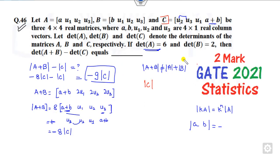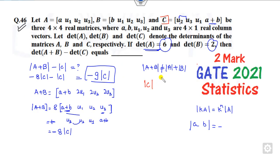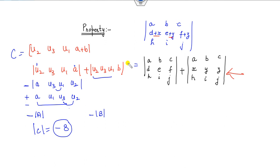The determinant of A is given as 6 and det(B) is 2. So det(C) equals minus 6 minus 2, which is minus 8. Substituting this back, the determinant of A plus B minus det(C) equals 8 times (minus of minus 8) giving 72 as the final answer. Make sure you apply the determinant property that swapping any row or column introduces a negative sign — that is the key concept behind this two-mark question.